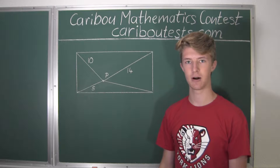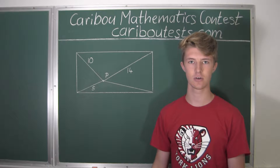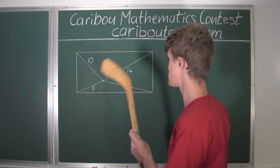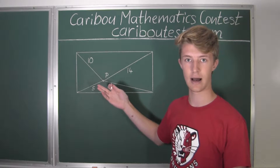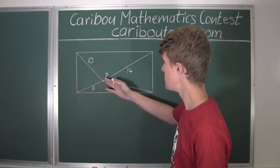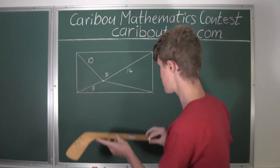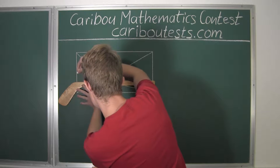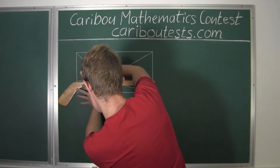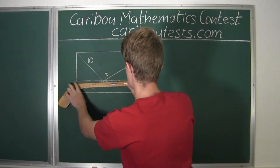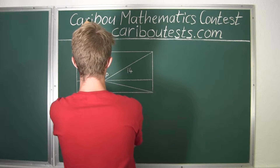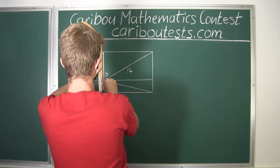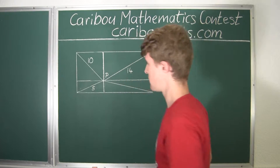In geometry problems, it's normal to draw extra lines and circles, and to look for relations that may help solve the problem. In our case, I will be drawing two extra lines which will be going through the point P and will be parallel to the sides of the rectangle.